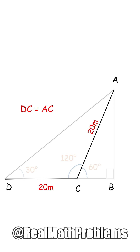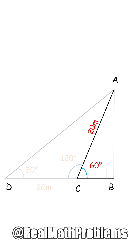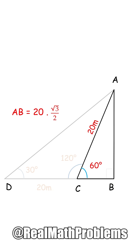Finally, in the right triangle ABC, having the hypotenuse AC and the adjacent angle of 60 degrees, the segment AB will be calculated as AC multiplied by the sine of 60 degrees, or 20 times the square root of 3 over 2, and it equals 10 times the square root of 3.